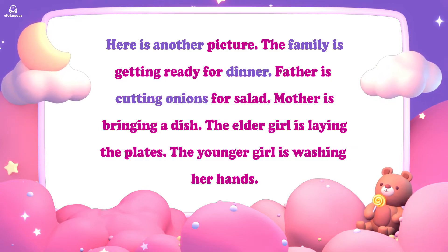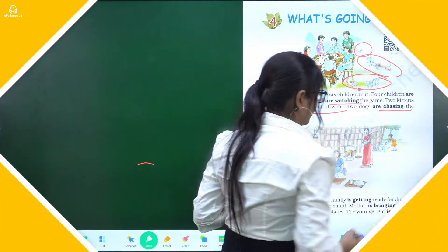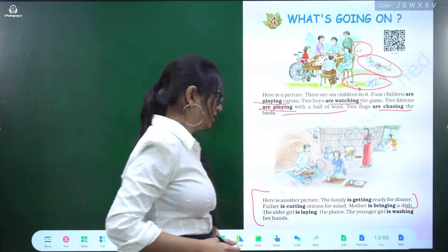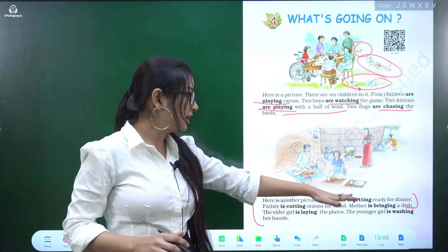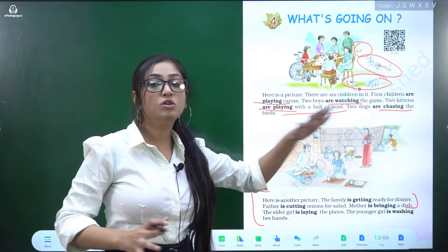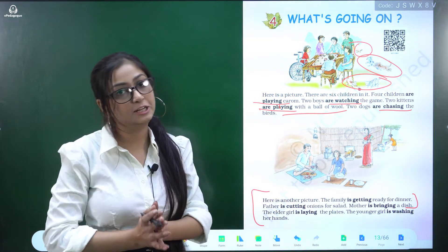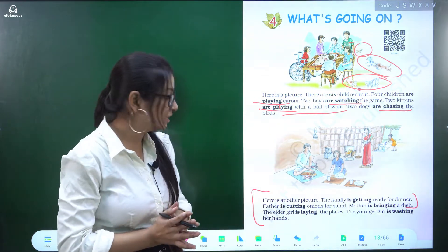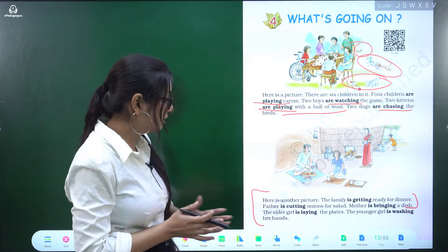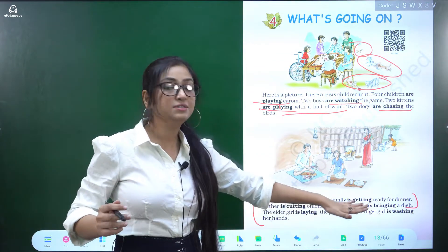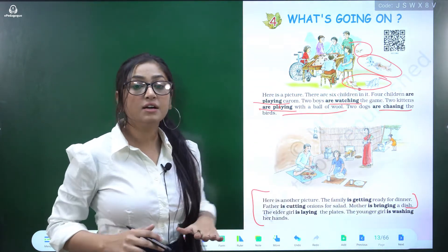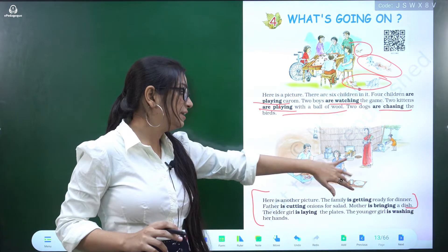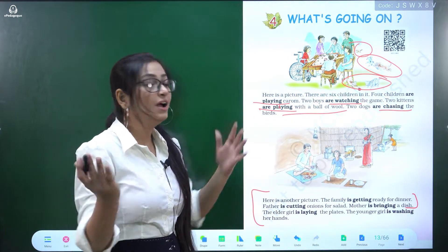Mother is bringing a dish. What action is happening? What is the family preparing? They are preparing for dinner. Father is cutting onions for salad.